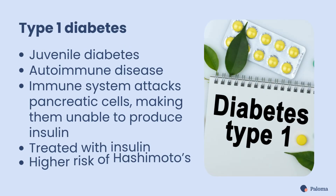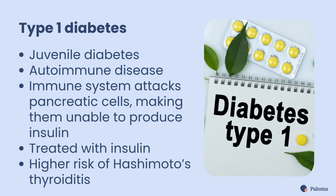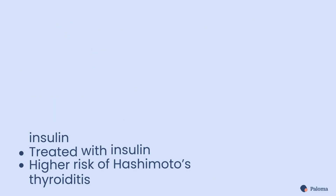Type 1 diabetes is also called juvenile diabetes. It's an autoimmune disease. In type 1 diabetes, the immune system attacks pancreatic cells, making them unable to produce insulin. Type 1 diabetes requires insulin treatment. People with type 1 diabetes are at higher risk of Hashimoto's thyroiditis.